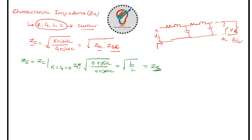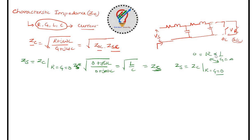Surge impedance is the characteristic impedance when R and G are zero. Do not confuse this with R being proportional to 1/G — these are two different parameters in the circuit. The surge impedance Zs = √(L/C), using the basic formula from power system transmission lines.